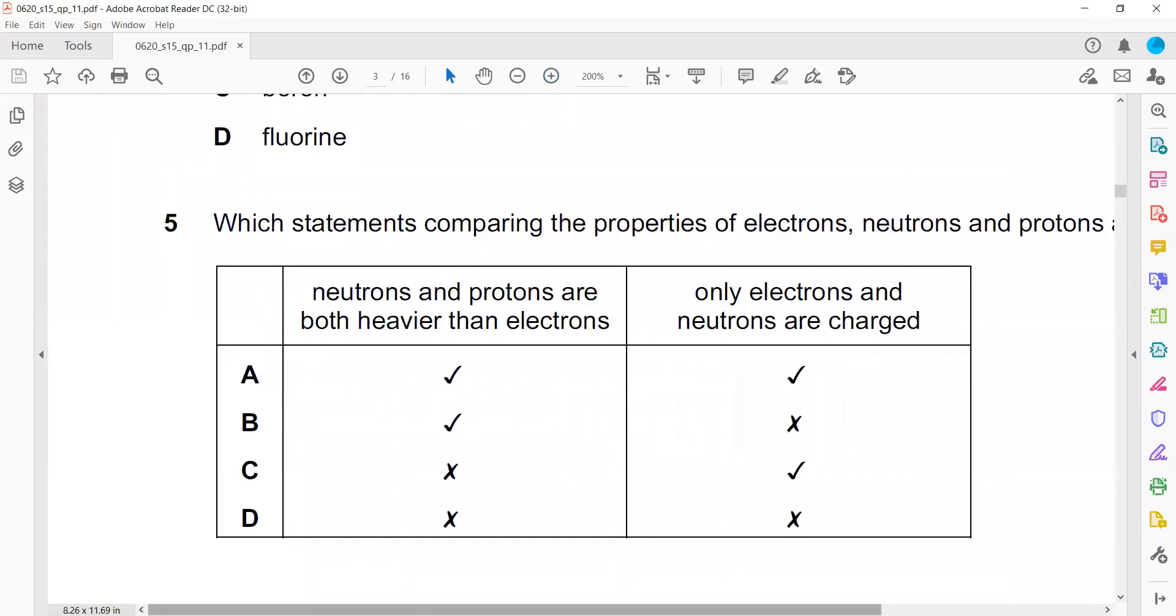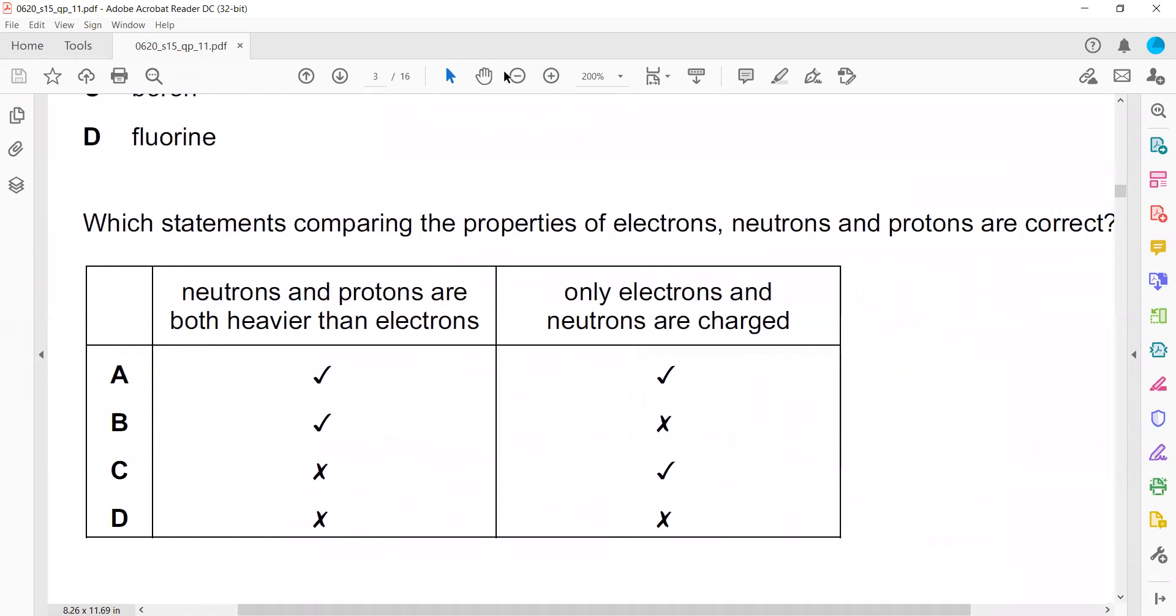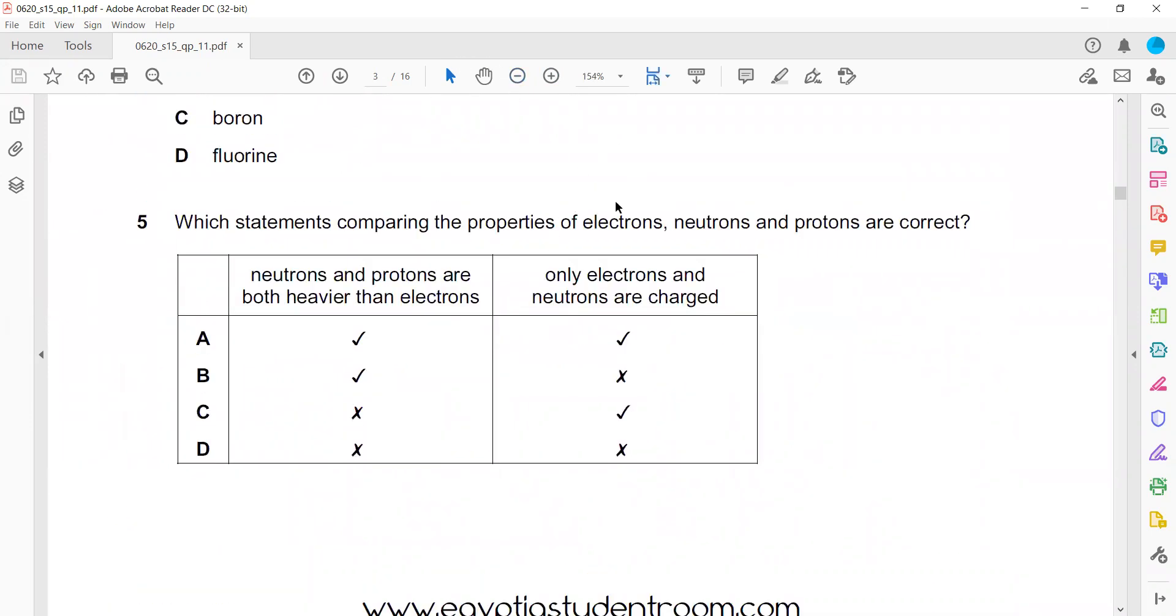Which statements comparing the properties of electrons, neutrons, and protons are correct? Neutrons and protons both are heavier, both have more mass. That's true. Only electrons and neutrons are charged? That's wrong. Electrons and protons are charged and neutron is neutral. That's why B is the right answer.